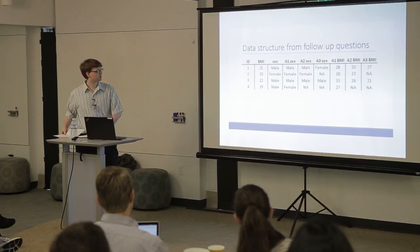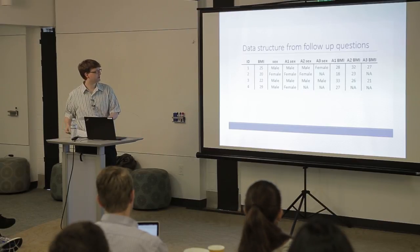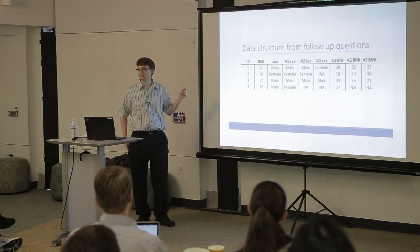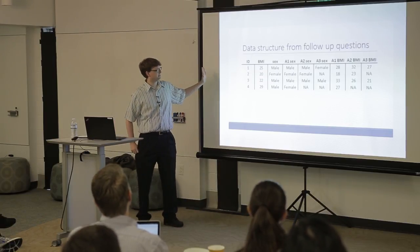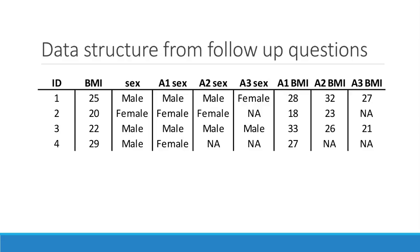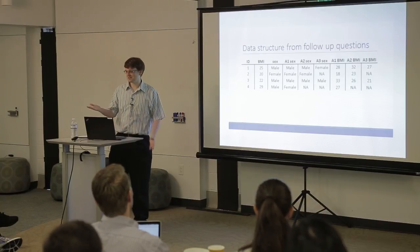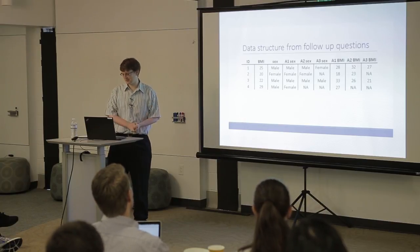Let's go through the data structure — what does ego network data look like? This is an example called an adjacency list. You have traditional survey questions: you might ask what's your BMI, what's your sex. Then you ask about their first friend — what's their sex — and their second friend. You probably won't ask about their BMI because ego likely won't know, but that's shown in this example.